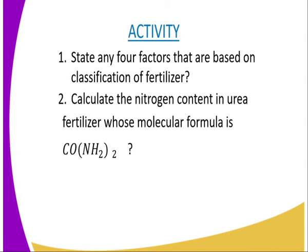I'm going to leave you with the following assignment. Question number one: state any four factors that are based on the classification of fertilizers. Question two: calculate the nitrogen content in urea fertilizer, whose formula is CO(HN2)2. Follow the procedure which I have already shown you.